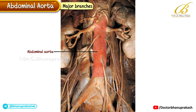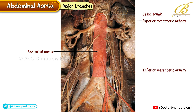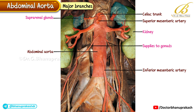It gives rise to three unpaired ventral branches of the celiac trunk, the superior mesenteric artery, and the inferior mesenteric artery. There are also three paired lateral branches supplying the suprarenal glands, kidneys, and gonads.